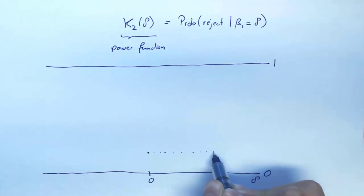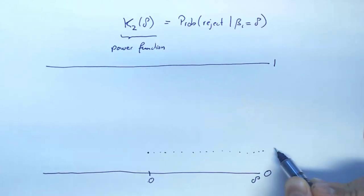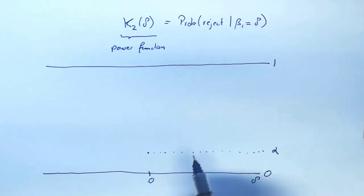So here, this has to be alpha. Then, as we increase delta a little bit, the probability of rejection increases.